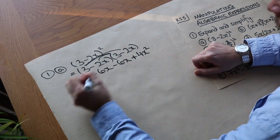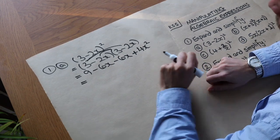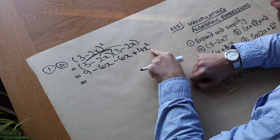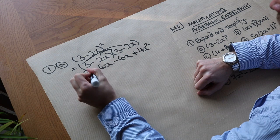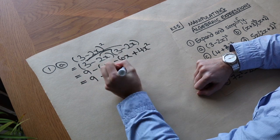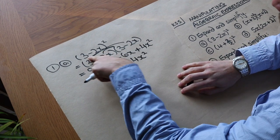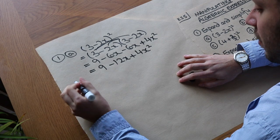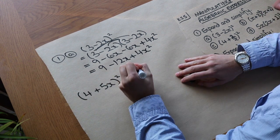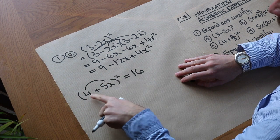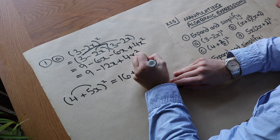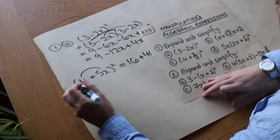We collect like terms — terms where the powers and variables are the same. So we get 9 - 12x + 4x². A quick way to expand two terms squared: for example (4 + 5x)², square the first to get 16, multiply the two terms together and double it — 4 times 5x is 20x, doubled is 40x — then square the second term: (5x)² is 25x².